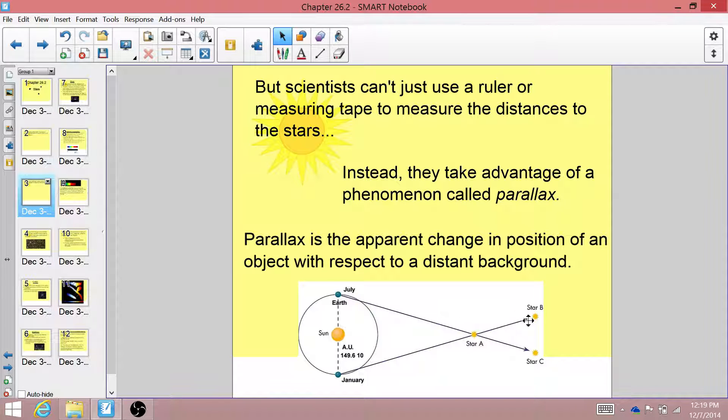And we can measure this apparent shift, how far apart star B and star C are, to figure out how much star A looks like it's moving. And based on that, we can figure out using simple geometry how far away star A is from Earth. It seems like a complicated process, but it's really not that difficult.